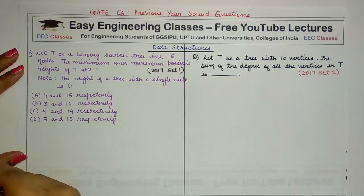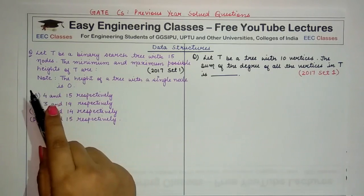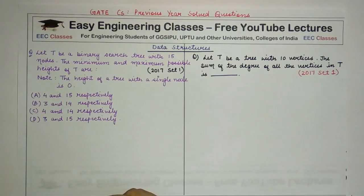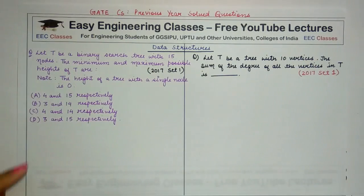Now you have to remember that whenever you are asked the maximum and minimum height with a given number of nodes, you have to find the maximum levels and minimum levels that would be possible with the particular number of nodes. To find out the minimum possible height, you have to find a tree in which each level is completely filled by the maximum number of nodes.